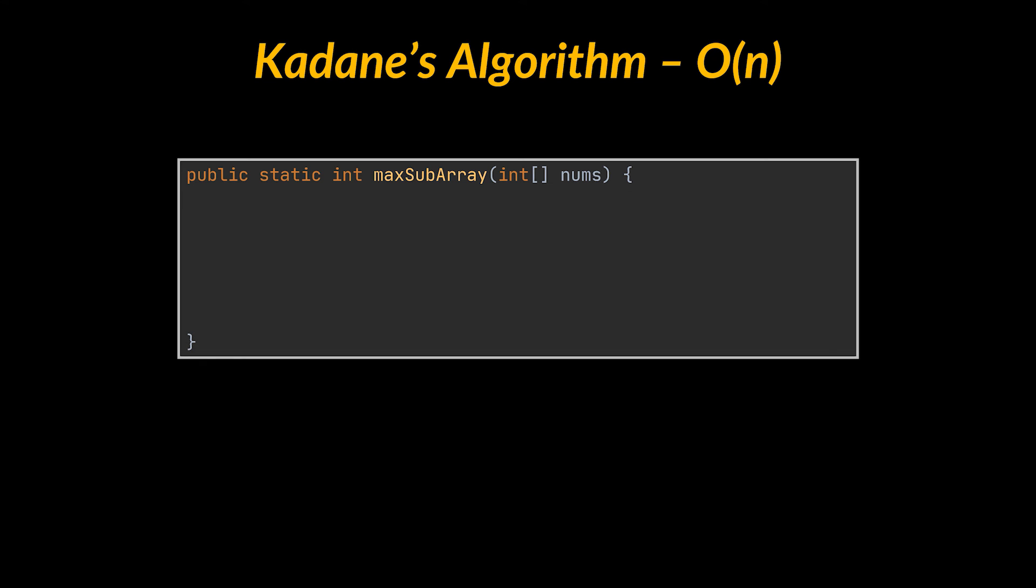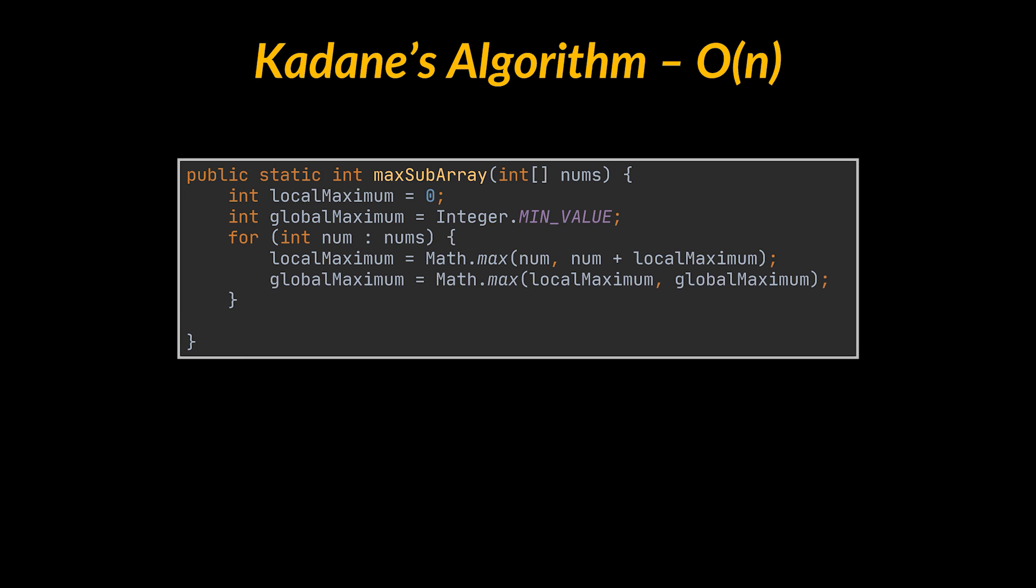In the maxSubarray method, we are first going to initialize the local and global maximum variables. Then, as mentioned, we will need to iterate only once on the elements stored inside the given array. And for each iteration, we are going to find the maximum between the current value we are at and the sum of that value added to the previous local maximum we retrieved. The maximum of these local maximums we fetched will be the global maximum we want. This value was retrieved again with the help of the Math.max method. Finally, after the iteration is done, we return the global maximum, which is the solution to our maximum subarray problem.